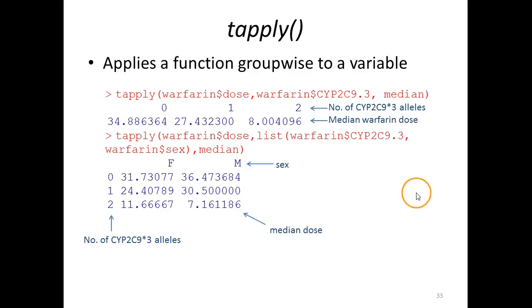In this example, we have loaded the well-known warfarin data set, and we want to calculate the dose, or the median dose, separately for each of the three CYP2C9 star 3 genotype groups, which have the values 0, 1, and 2.